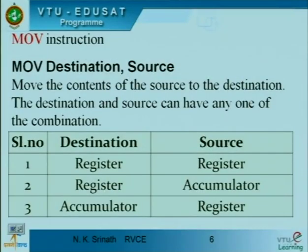Now let us talk about a simple instruction called MOV, and then discuss one more instruction to see how it can be programmed — what the procedure is, the intricacies involved, and what assembler directives are. A MOV instruction basically has two operands: the first operand is the destination and the second operand is the source. Whenever we mention the MOV mnemonic, the destination operand comes first, followed by a comma, then the source operand.